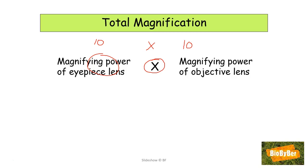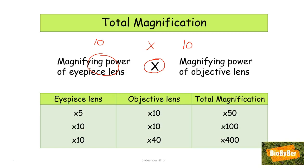Let's look at a few examples. If the eyepiece lens gives a magnifying power of ×5 and the objective lens has a magnifying power of ×10, then the total magnification is 5 × 10 = 50. If the eyepiece magnifies ×10 and the objective magnifies ×10, the total magnification is 100. If the eyepiece magnifies ×10 and the objective magnifies ×40, the total magnification is 10 × 40 = 400.